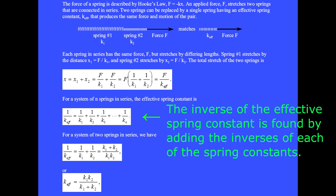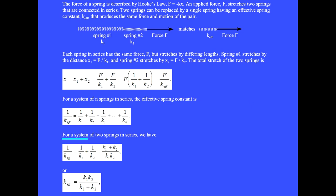The inverse of the effective spring constant is found by adding the inverses of each of the spring constants. For a system of two springs in series, we get k effective equals k1 k2 over k1 plus k2.